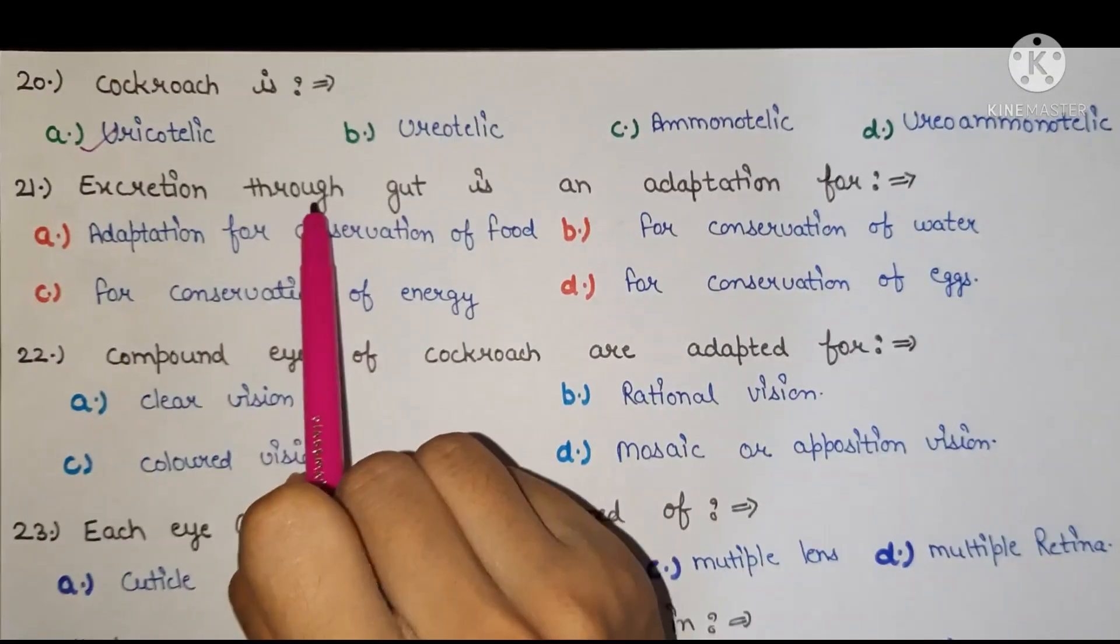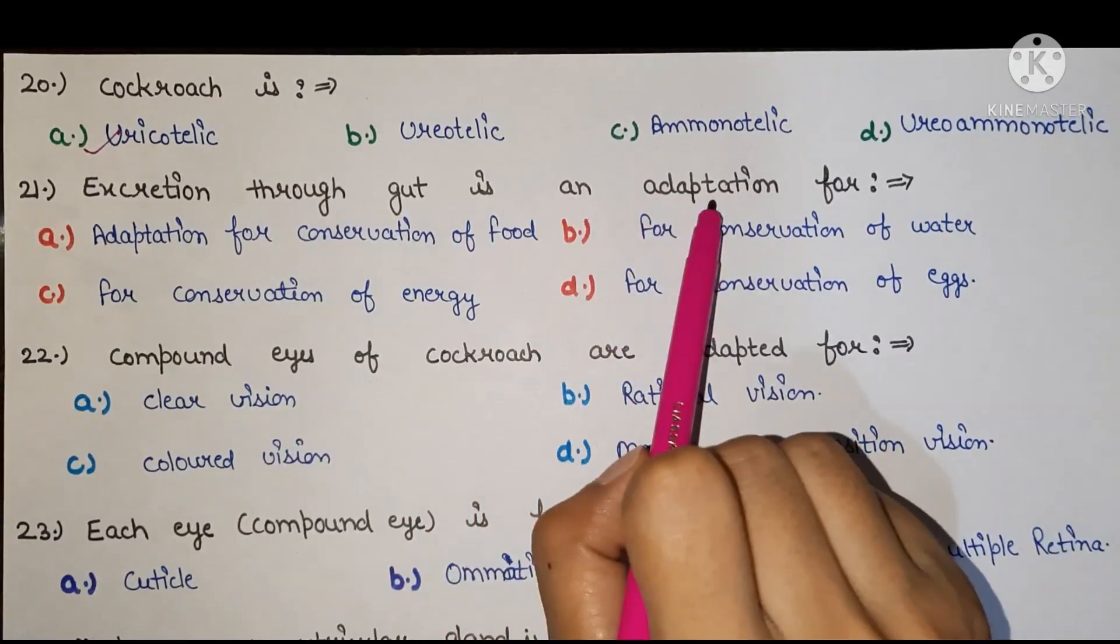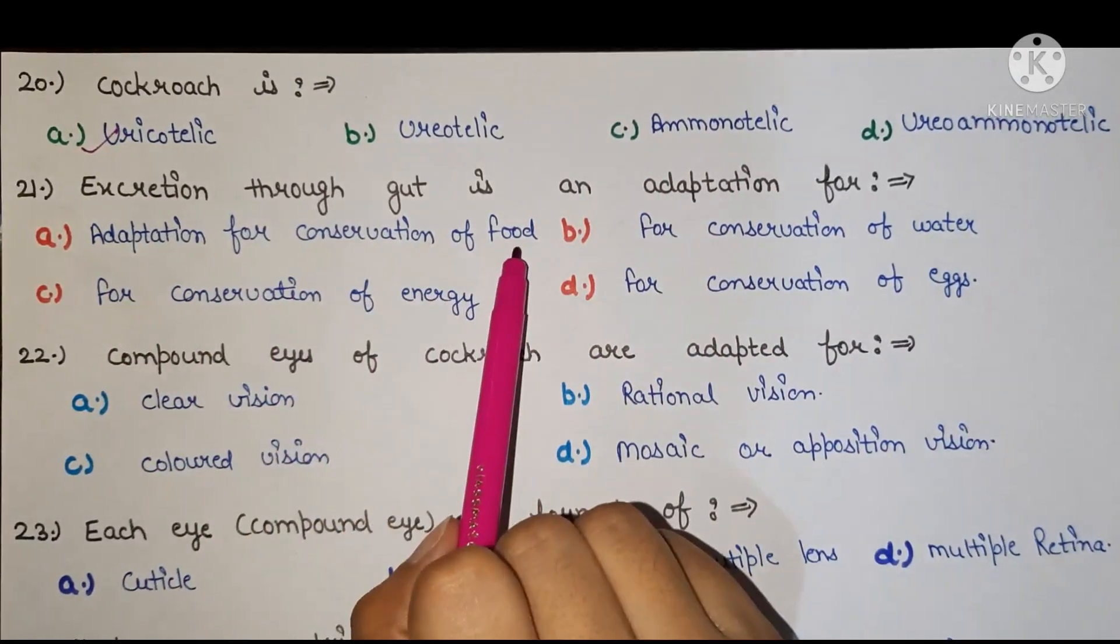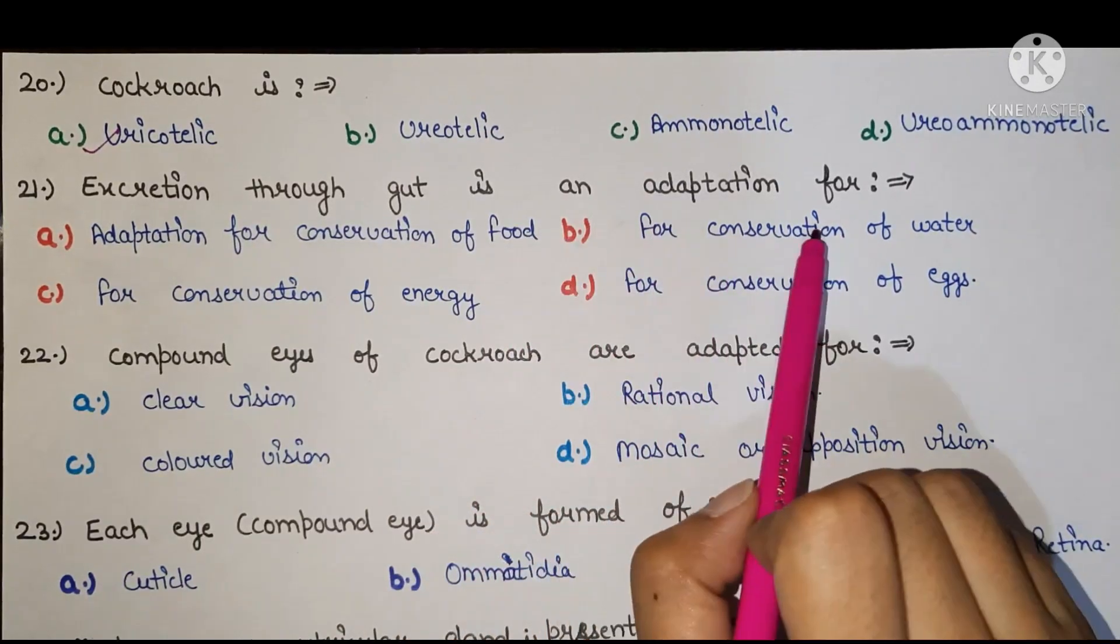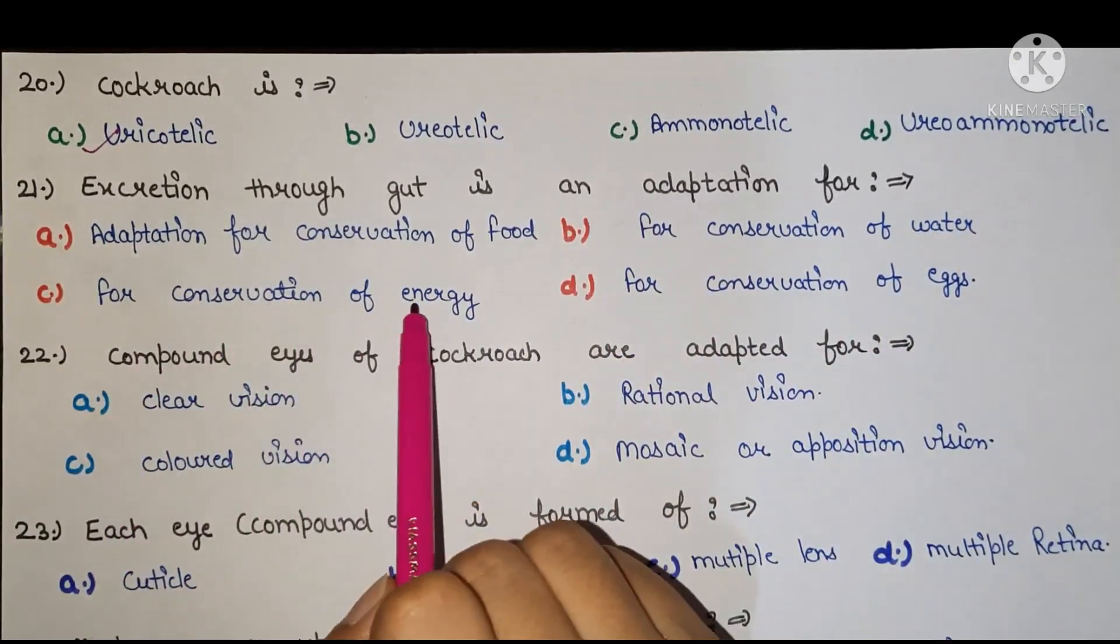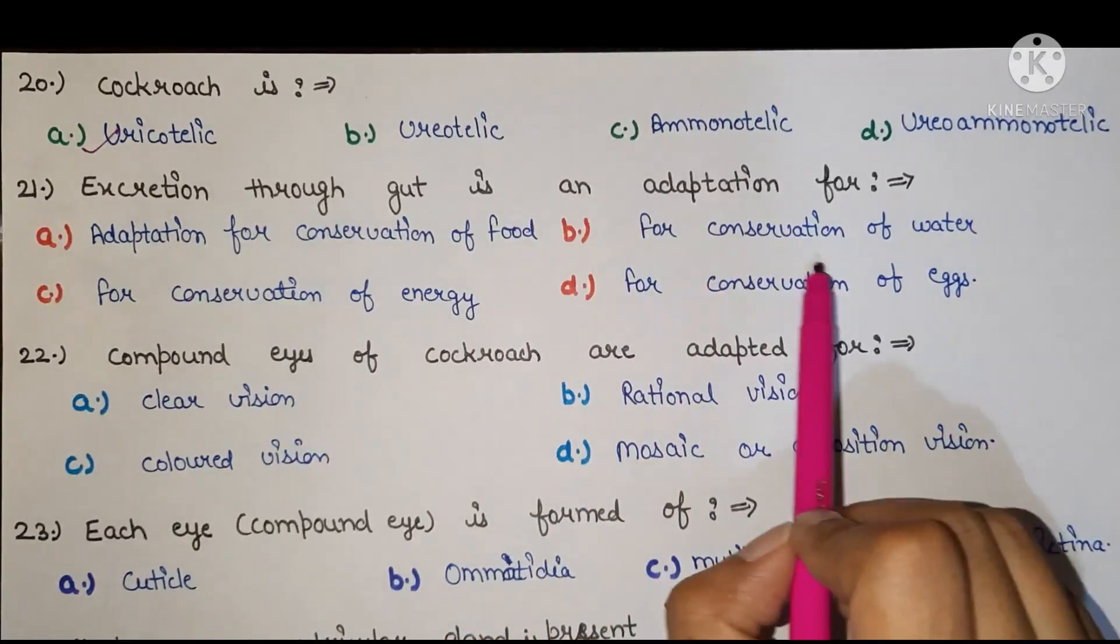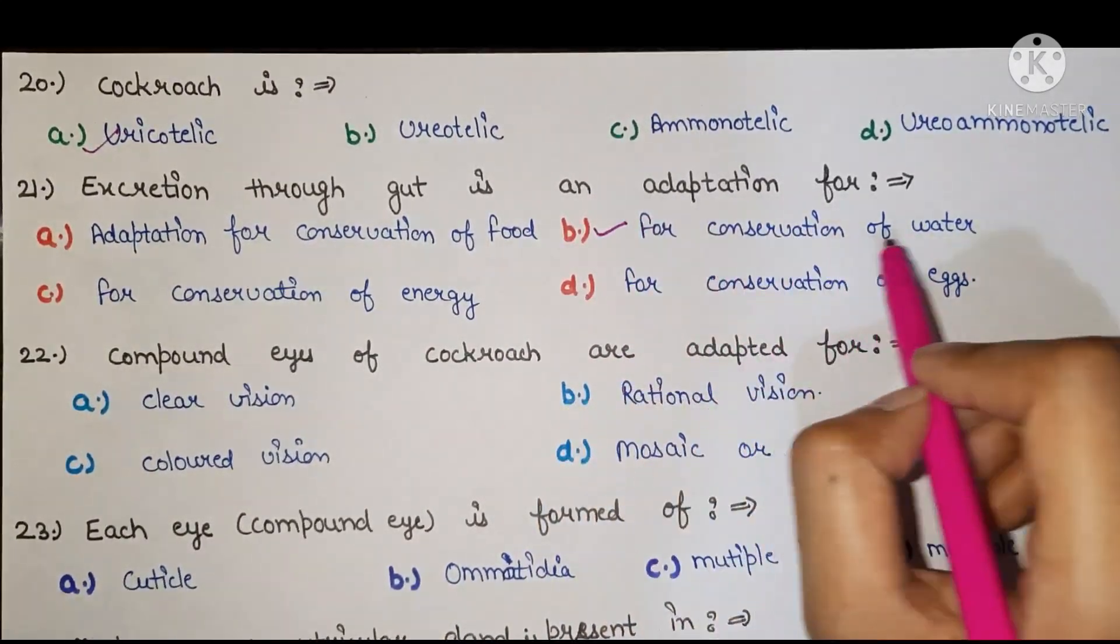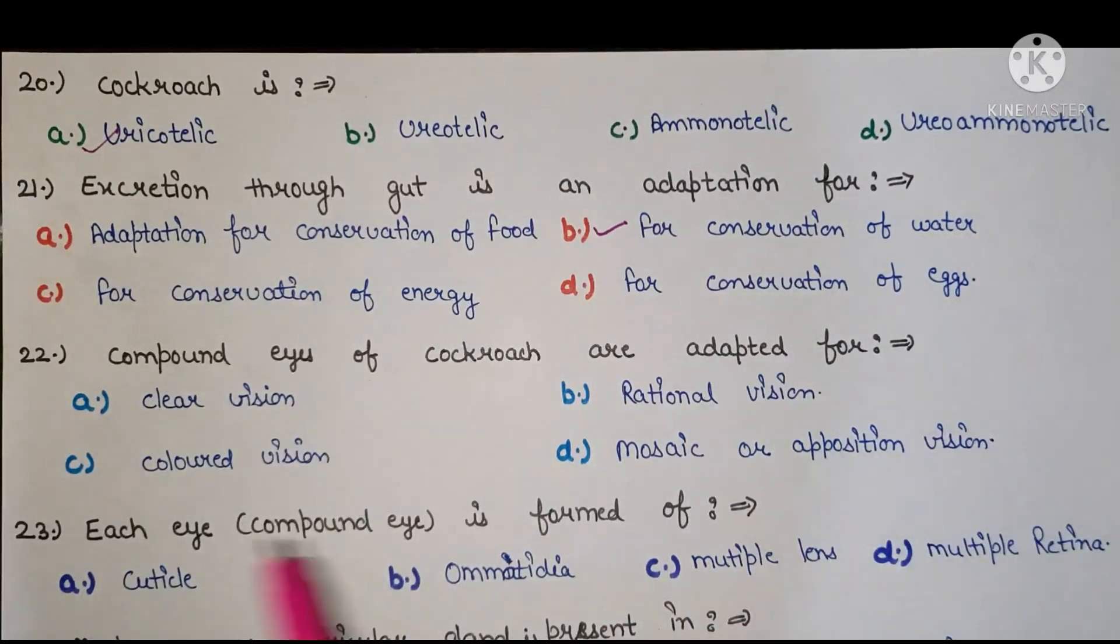Next, excretion through gut is an adaptation for A adaptation for conservation of food, B for conservation of water, C for conservation of energy, D for conservation of eggs. Right answer is B, for conservation of water.